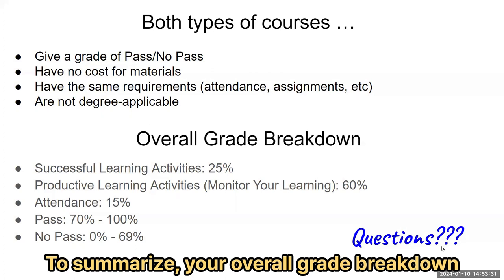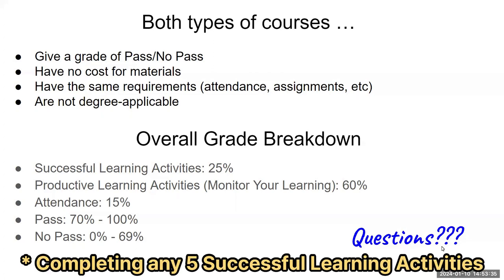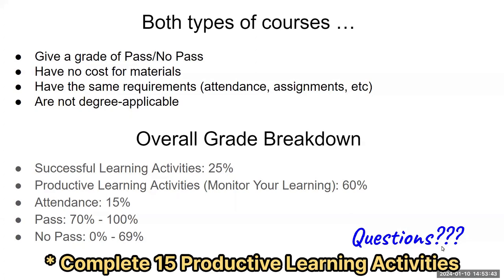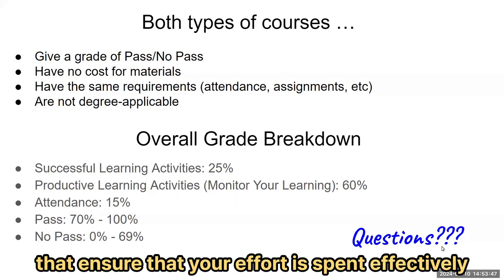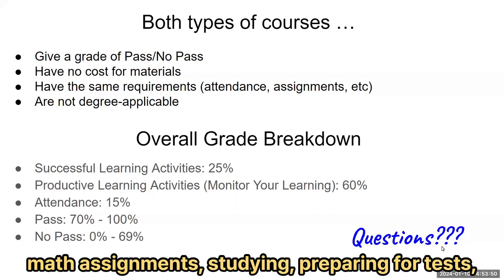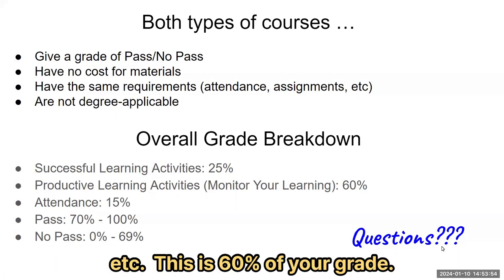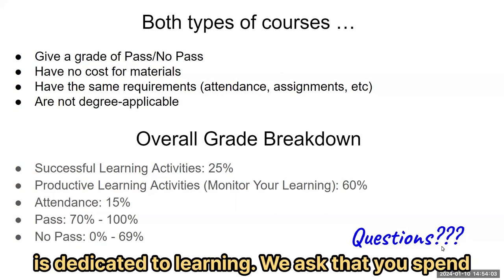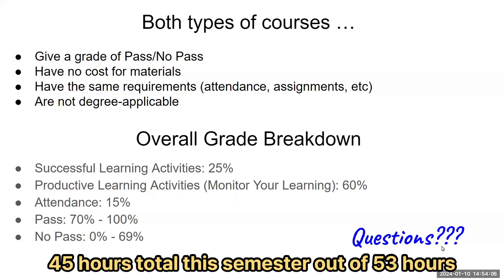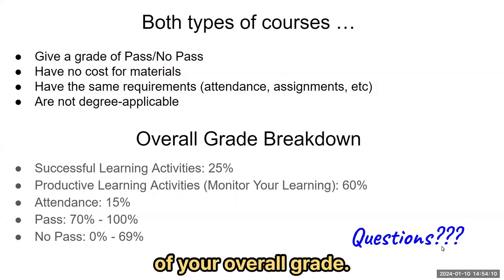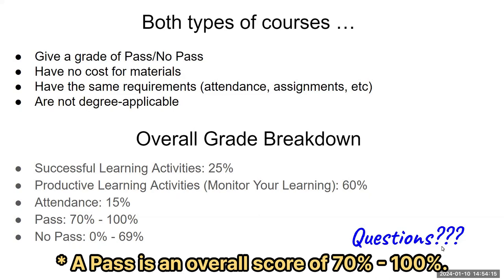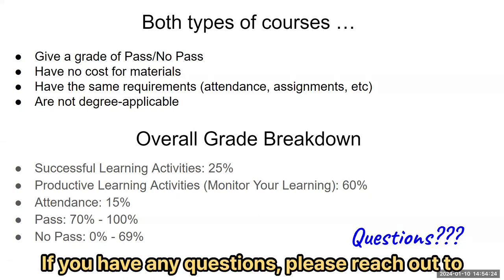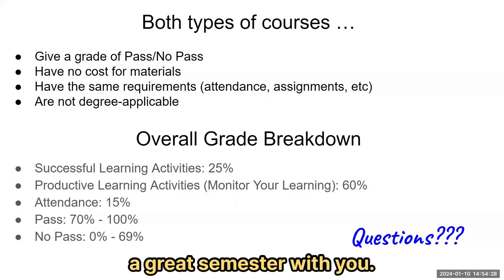To summarize, your overall grade breakdown is: complete any five successful learning activities of your choice — this is 25% of your overall grade. Complete 15 productive learning activities that ensure your effort is spent effectively monitoring your learning, such as working on math assignments, studying, and preparing for tests — this is 60% of your grade. Regularly attend class to ensure consistent time is dedicated to learning; we ask that you spend 45 hours total this semester out of the 53 hours this class will meet — this is 15% of your overall grade. A pass is an overall score of 70% to 100%; not passing is 0 to 69%. If you have any questions, please reach out to any concurrent support instructor. We look forward to having a great semester with you.